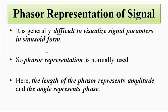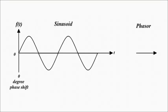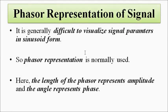The next important concept is the phasor representation of signals. When using the sinusoidal representation to describe signals and parameters such as amplitude, frequency, and phase, it can be difficult to visualize signal parameters clearly — especially when there are multiple signals. For that reason, the phasor representation is used, where the signal is represented by a vector. The length of the phasor represents the amplitude of the signal, and the angle of orientation represents the phase.